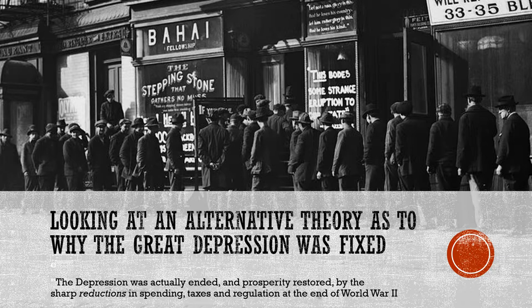Here is a picture of a group of people standing outside of stores lining up to try and buy items due to rationing. There's a quote at the bottom about what this theory will actually talk about: the Depression was actually ended and prosperity restored by the sharp reductions in spending, taxes, and regulation at the end of World War II. I thought this was really interesting because it's different from what we've learned in class, but still uses the same economic principles. While I may not agree with everything this theory proposes, I think it makes a lot of sense.